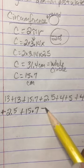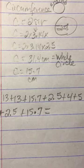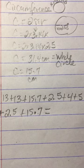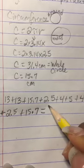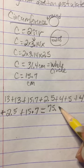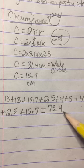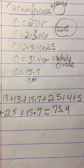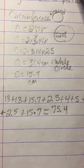I have 13, 13, 15.7, 2.5, 4, 5, 4, 2.5, and 15.7 — that's nine numbers. Let me get my calculator and add those together: 13 plus 13 plus 15.7 plus 2.5 plus 4 plus 5 plus 4 plus 2.5 plus 15.7 equals 75.4.